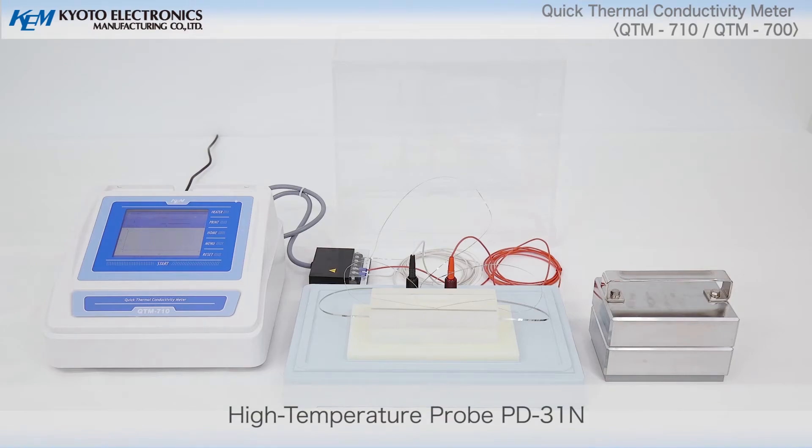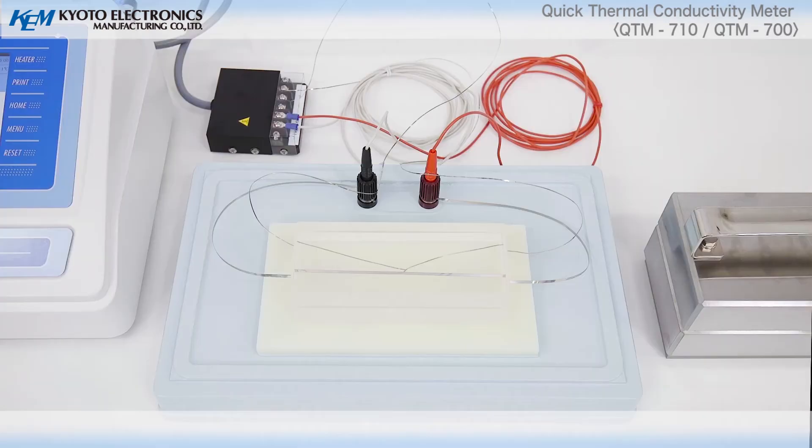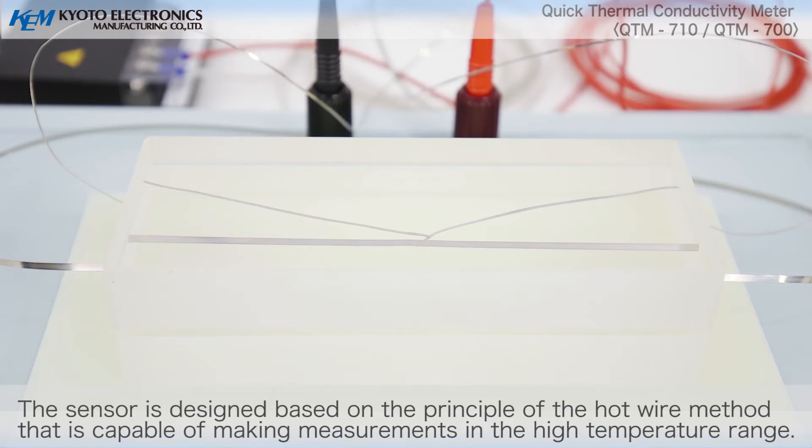High temperature probe, PD-31N. Compare it to other probe methods like sensor probes PD-11N and PD-13N. This setup is somewhat complicated, but the sensor is designed based on the principle of the hot wire method that is capable of making measurements in the high temperature range.